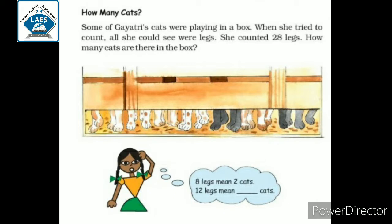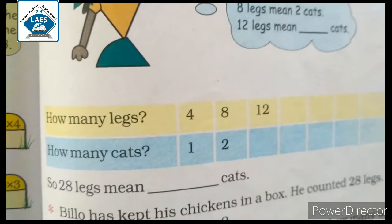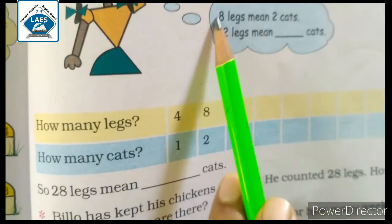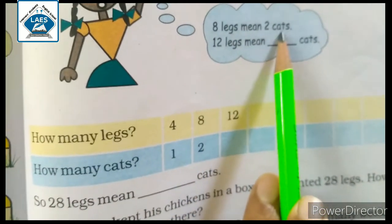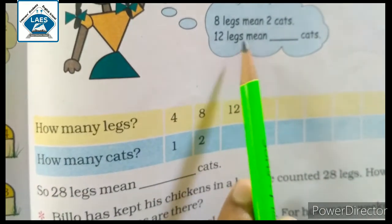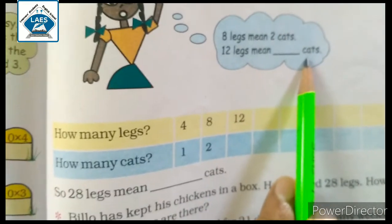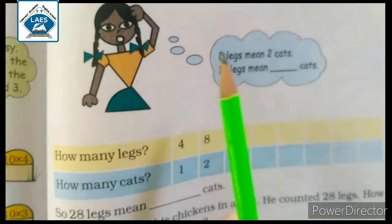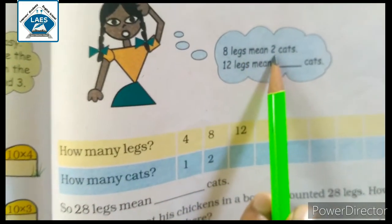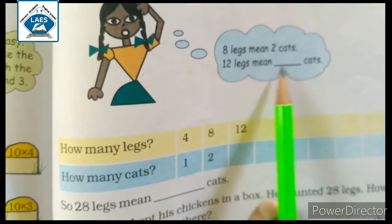She counted 28 legs, and we need to find how many cats are there in the box. Students, you would know how many legs one cat has. One cat equals four legs. Eight legs mean two cats. Twelve legs mean dash cats. So Gayatri knows that eight legs means two cats, but twelve legs means dash cats — as the legs increase, she gets confused.